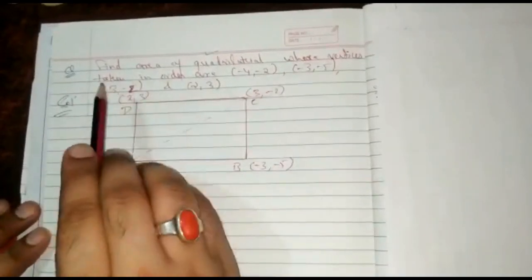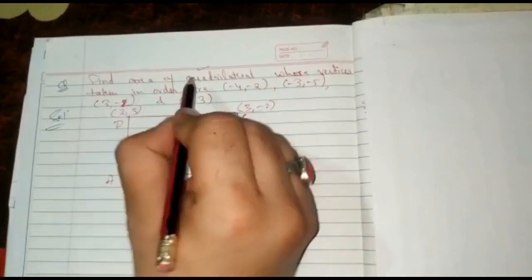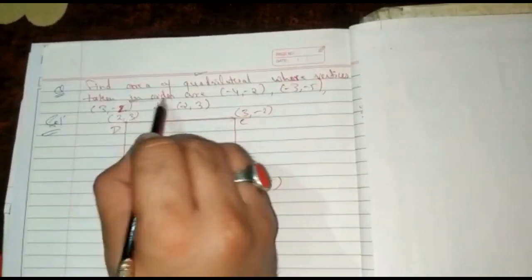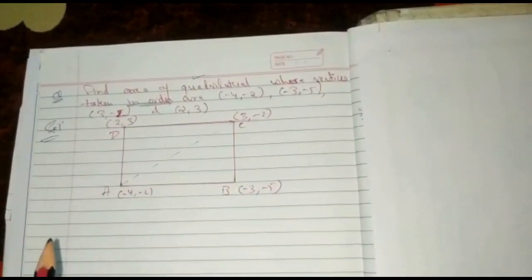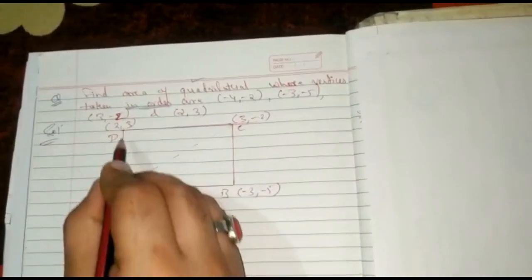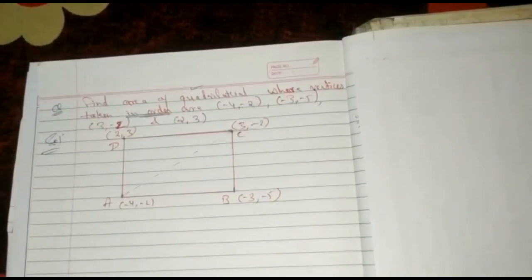Now there is one more question: find the area of a quadrilateral whose vertices, taken in order, are (−4, −2), (−3, −5), (3, −2), and (2, 3). It is given that the vertices are taken in order, meaning you must keep A, B, C, D in the proper sequence — you cannot change the order, otherwise you won't get the correct answer. So let ABCD be a quadrilateral with those vertices in order.